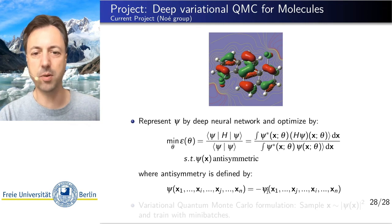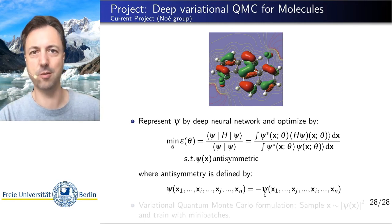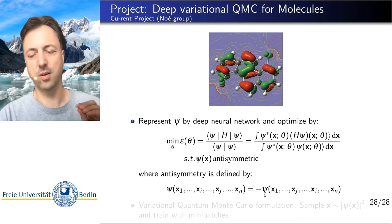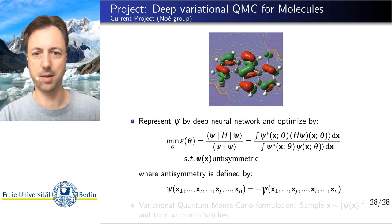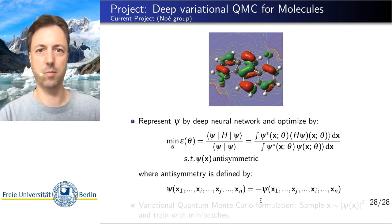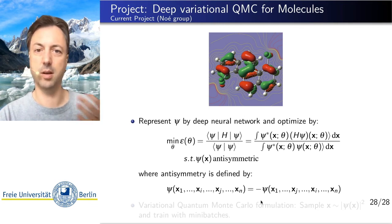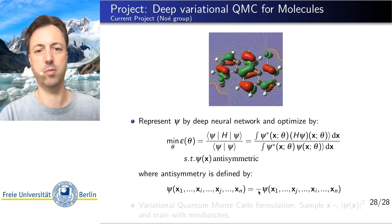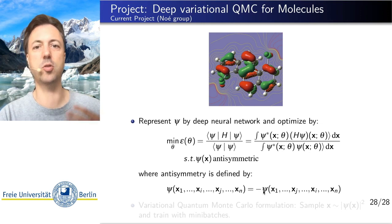We implement this by using so-called Slater determinants. We compute determinants of matrices whose elements are outputs of a neural network. Because matrix determinants are anti-symmetric, we automatically inherit this anti-symmetry property. But because we are using deep neural networks to define the elements of this matrix, we can get very expressive Slater determinants and therefore very powerful representations of our wave function. With this we can actually achieve unprecedented accuracy with these deep neural network wave functions for molecules.